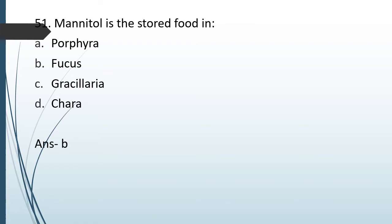Mannitol is the stored food in Phaeophyceae, i.e. the brown algae, and Fucus is an example of brown algae. Porphyra and Gracilaria are examples of red algae, and Chara is an example of green algae.